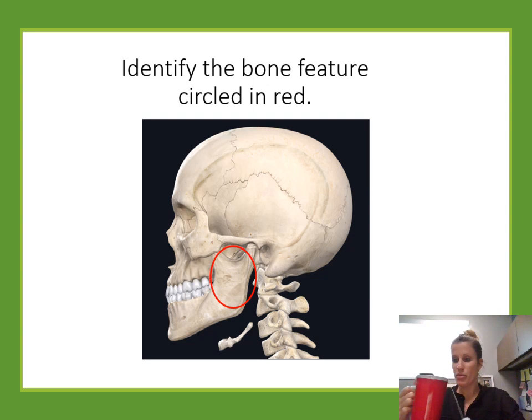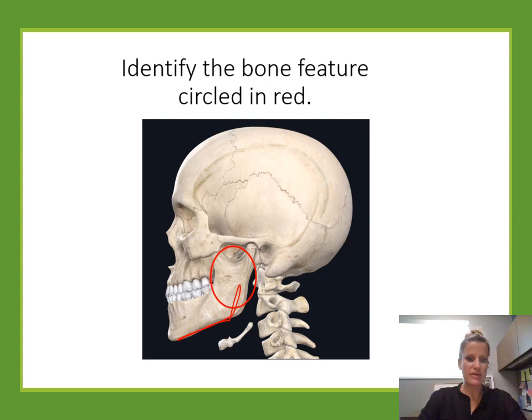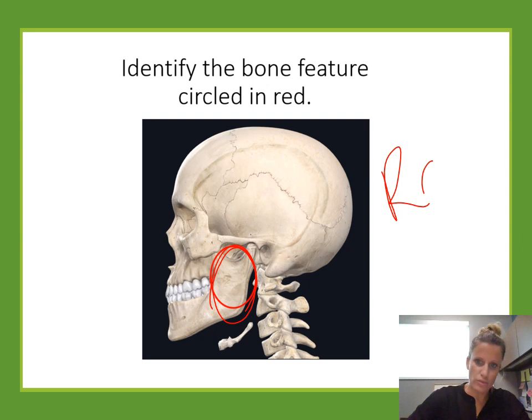Identify the bone feature circled. We're looking at a specific part of the mandible — the lower jaw. This is the part of the mandible that rises up to form a joint, called the ramus.